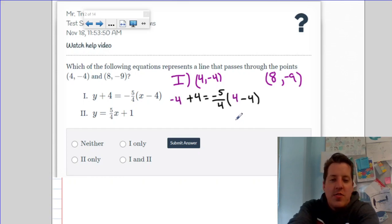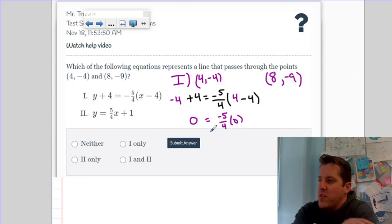In order for the line to work, both of these points have to come out to be true. What I mean by true is that if we look here, the left side combines to 0, and the right side combines to negative 5/4 times 0, which is also 0. So that means that for line 1, this first point works.